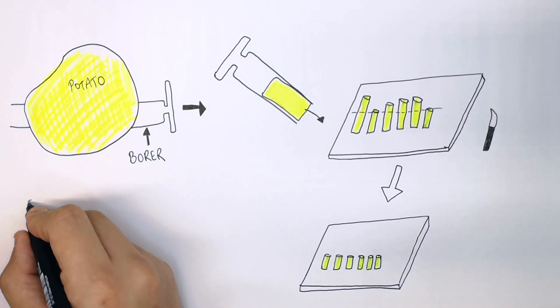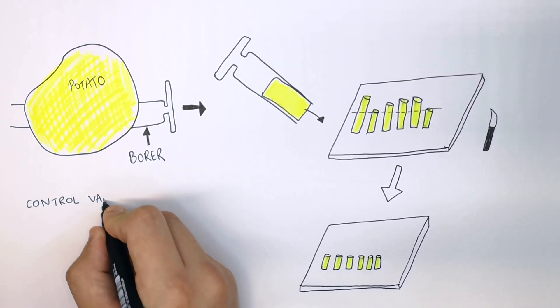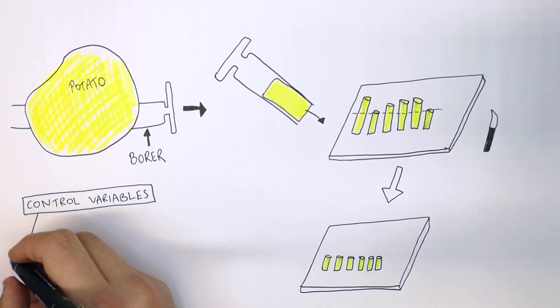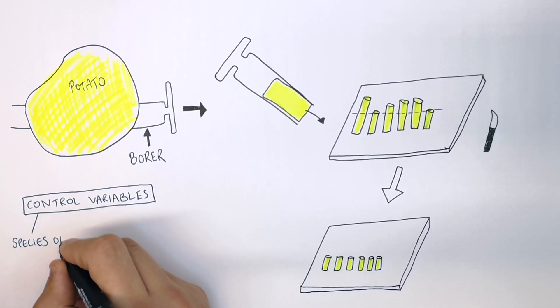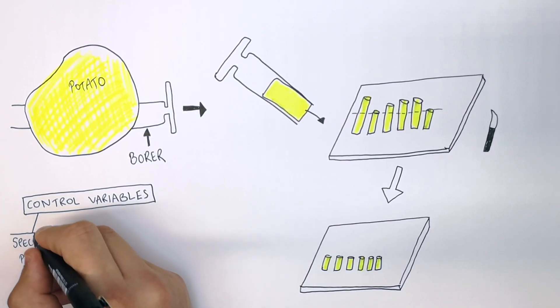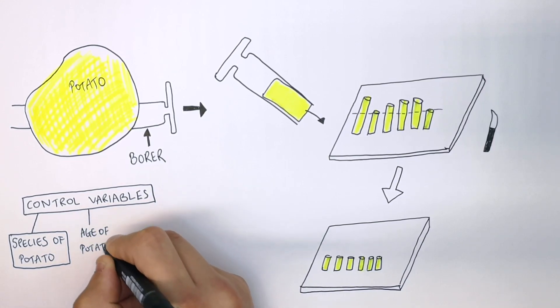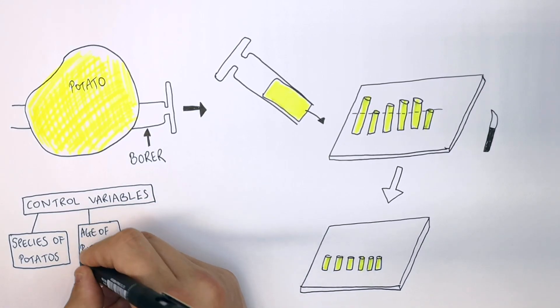So what aspects of the potato must you control? We call these the control variables. You must keep the species of potato the same. It's really important. You can't use different species of potato. You must use the same age of potato, or at least potatoes that don't look that different.